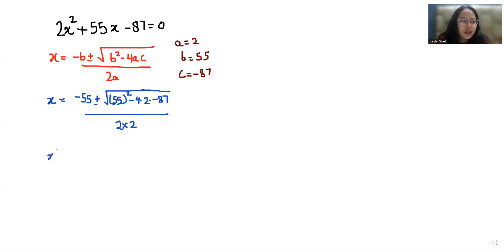So x equals negative 55 plus or minus under root, 55 squared is 3025, 4 times 2 is 8, 8 times 87 is 696, and negative negative is positive, by 4.